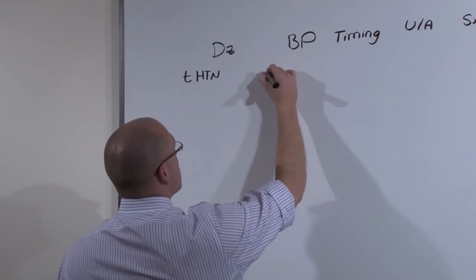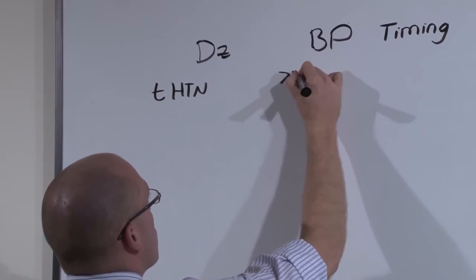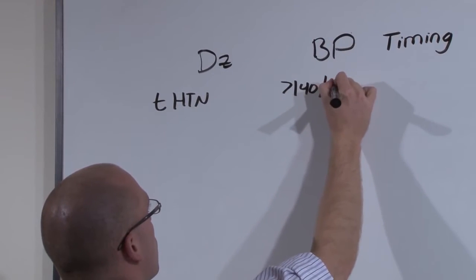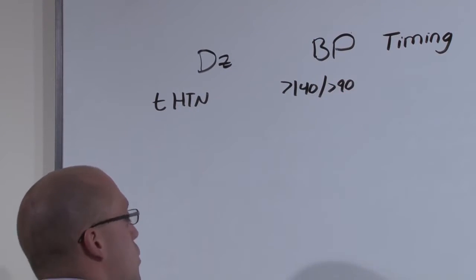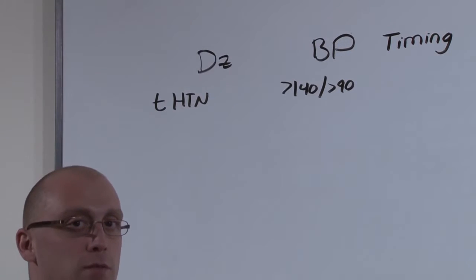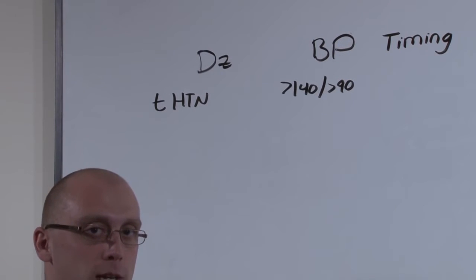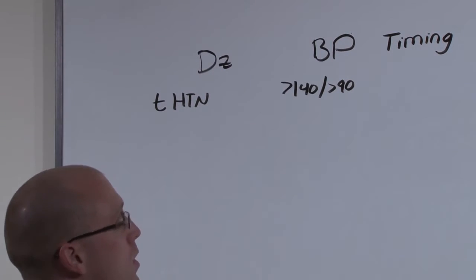In order to be diagnosed with hypertension, the blood pressure reading has to be greater than 140 over greater than 90. Remember, to be diagnosed with hypertension, you have to have two separate high blood pressure readings on two separate occasions.